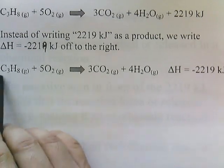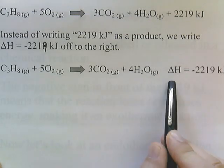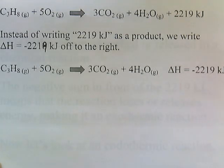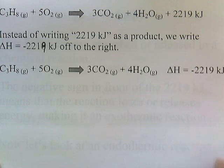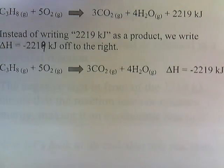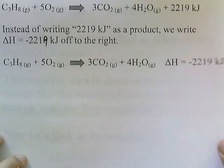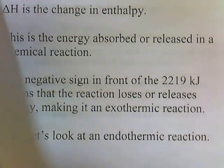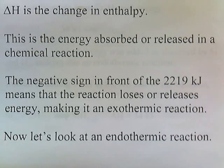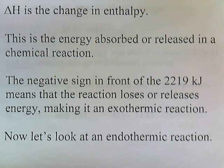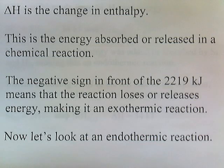You write the equation, and then you write delta H equals the energy gained or lost. Delta H is the change in enthalpy, and this is the energy absorbed or released in a chemical reaction. The negative sign in front of the 2,219 kilojoules means that the reaction loses or releases energy, making it an exothermic reaction.